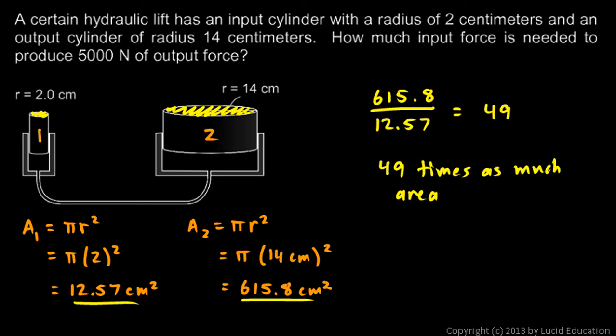So how much input force is needed to produce 5000 newtons of output? Well, if we want 5000 newtons of output, we only need 1/49th that much input force because the input force is going to be multiplied by 49. So we'll take the 5000 newtons divided by 49, and that tells us how much input force we need.